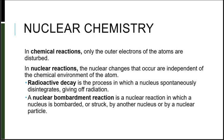As we mentioned in our last section, in chemical reactions only the outer electrons of the atoms are disturbed. But in nuclear reactions, the nuclear changes that occur are independent of the chemical environment of the atom. Radioactive decay is the process in which a nucleus spontaneously disintegrates, giving off radiation. A nuclear bombardment reaction is a nuclear reaction in which a nucleus is bombarded or struck by another nucleus or by a nuclear particle.